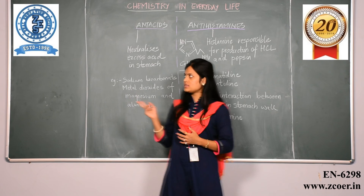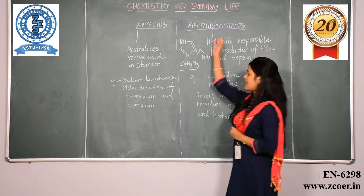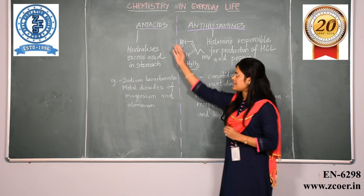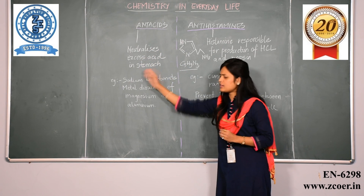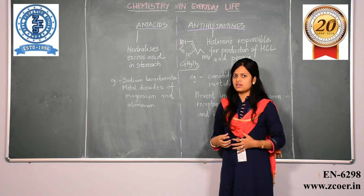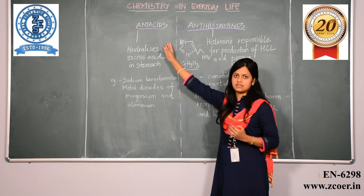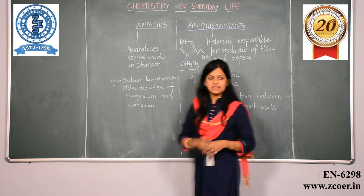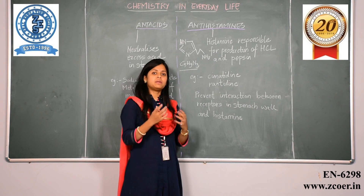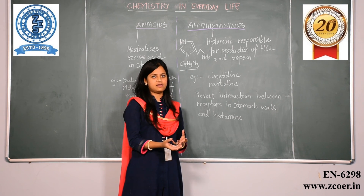So we have seen two parts: antacids and antihistamines. In antacids, there is already production of acid in the stomach, and that acid is neutralized by using antacids. Whereas antihistamines prevent the secretion of HCl itself. So antacids represent curing, and antihistamines represent prevention.